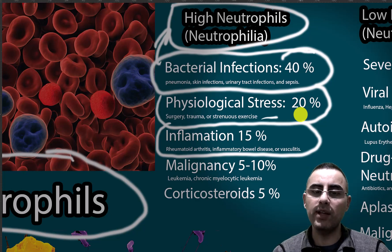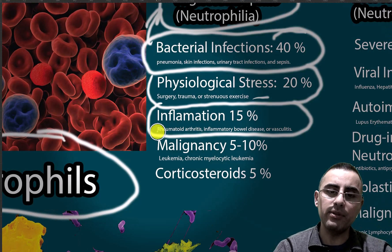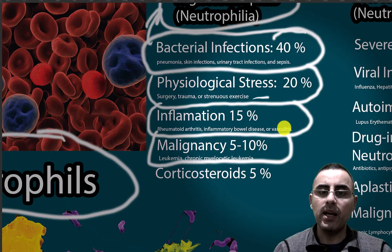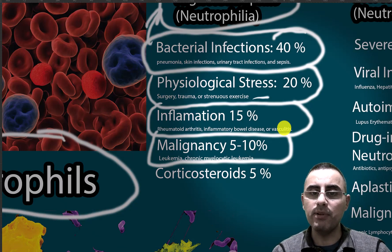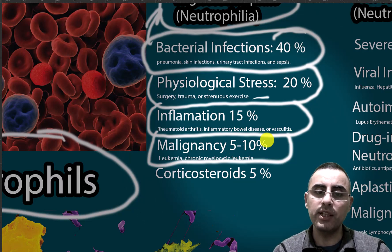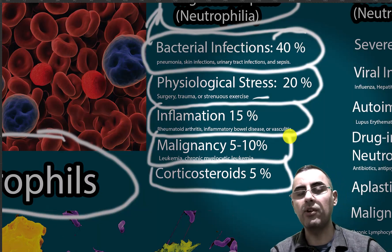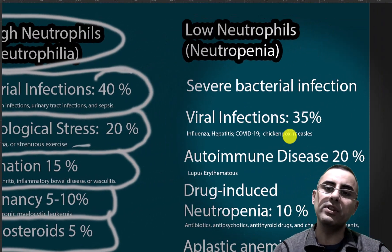Vasculitis and malignancies are important causes, though much rarer. Chronic myelogenous leukemia and several other types of leukemia can cause high neutrophil count. Steroid therapy with corticosteroids can also cause high neutrophil count. Now let's look at low neutrophils, called neutropenia.